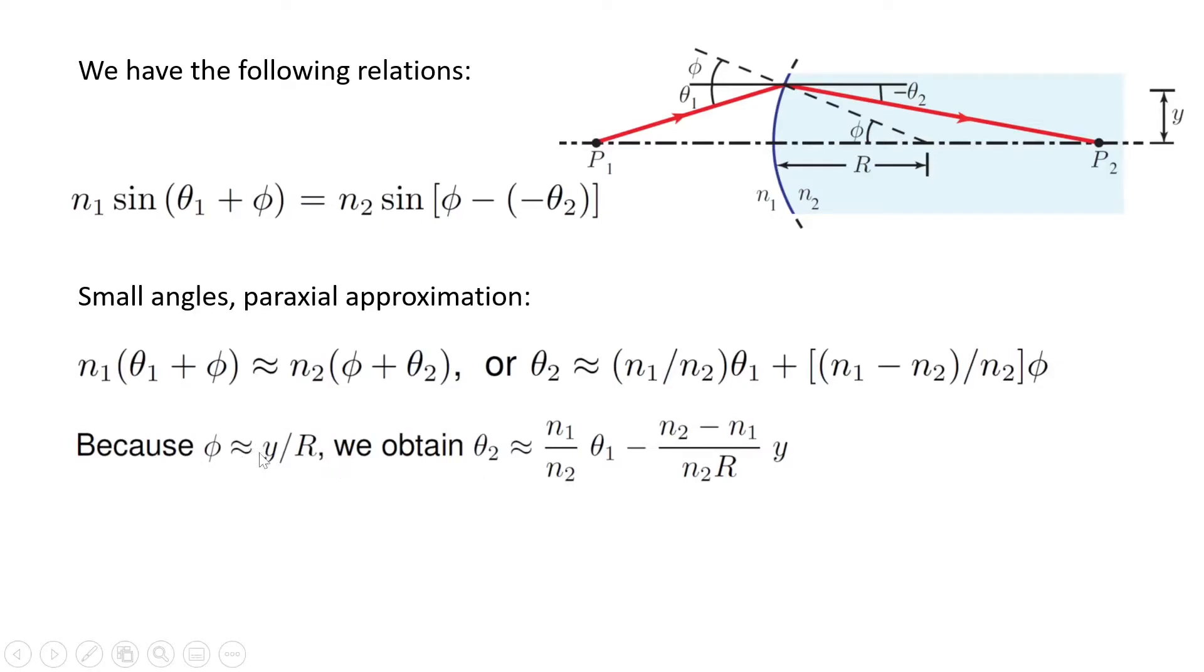So I substitute this into the above relation and obtain this equation: theta 2 is almost equal to n1 over n2 times theta 1 minus (n2 minus n1) divided by (n2 R) times y.